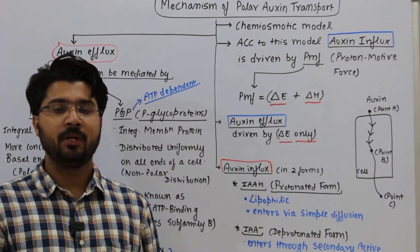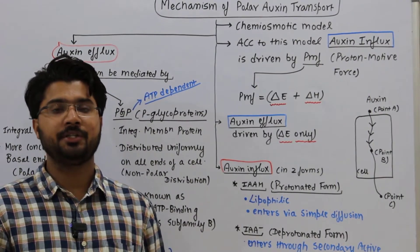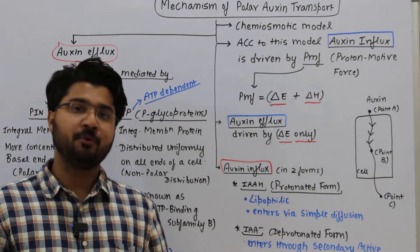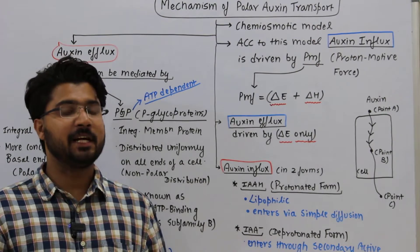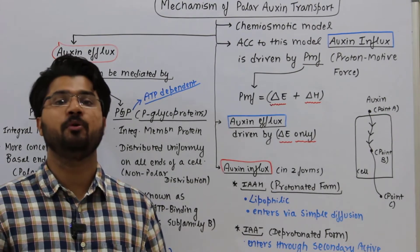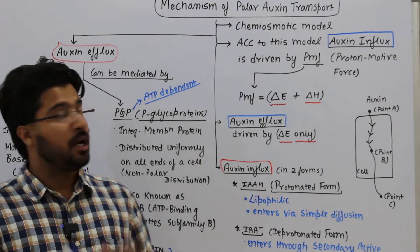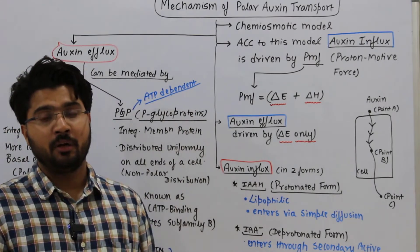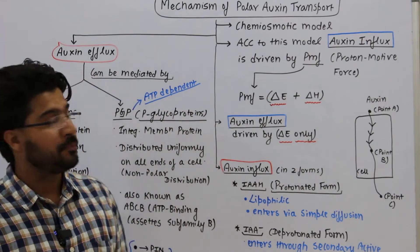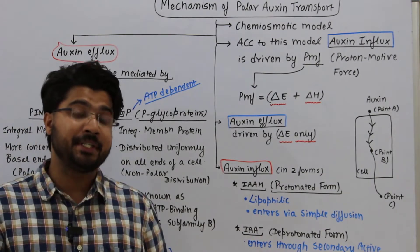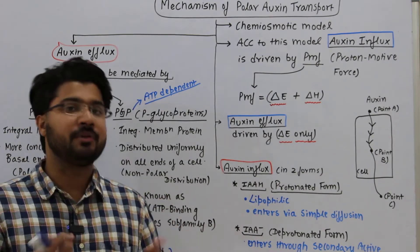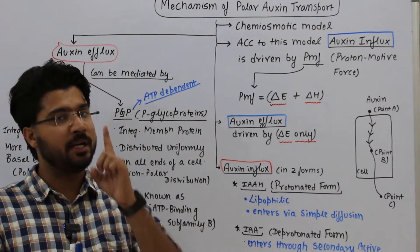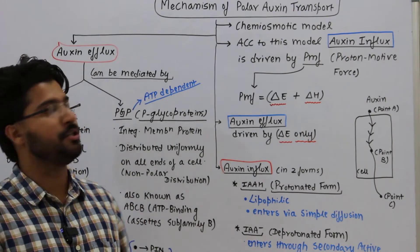Good evening students, welcome back to the lecture series on plant physiology. In this lecture on auxin transport part two, we will be discussing the detailed mechanism of polar auxin transport. This is explained with the help of a model called the chemiosmotic model. You can expect one direct question from this in the CSIR examination.